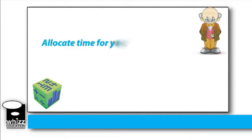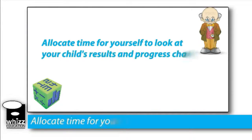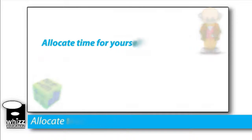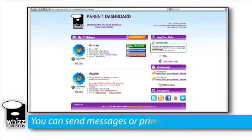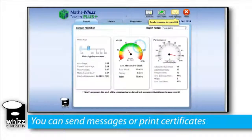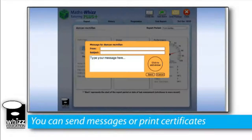You should also make a note in your diary for yourself when you can look at your child's results and progress charts. From the parent reports, you can also send messages, virtual stickers and create certificates — rewarding success, writing words of encouragement or setting targets.